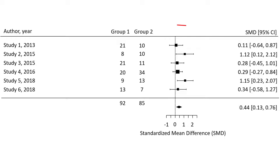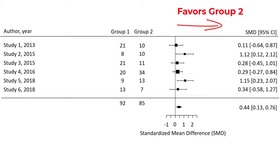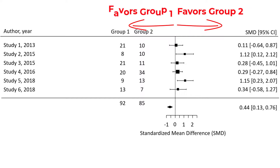In this example, anything to the right of the line of no effect means that it favours group 2 compared with group 1. On the other hand, if the results were to the left of the line, this means that it favoured group 1 compared to group 2.